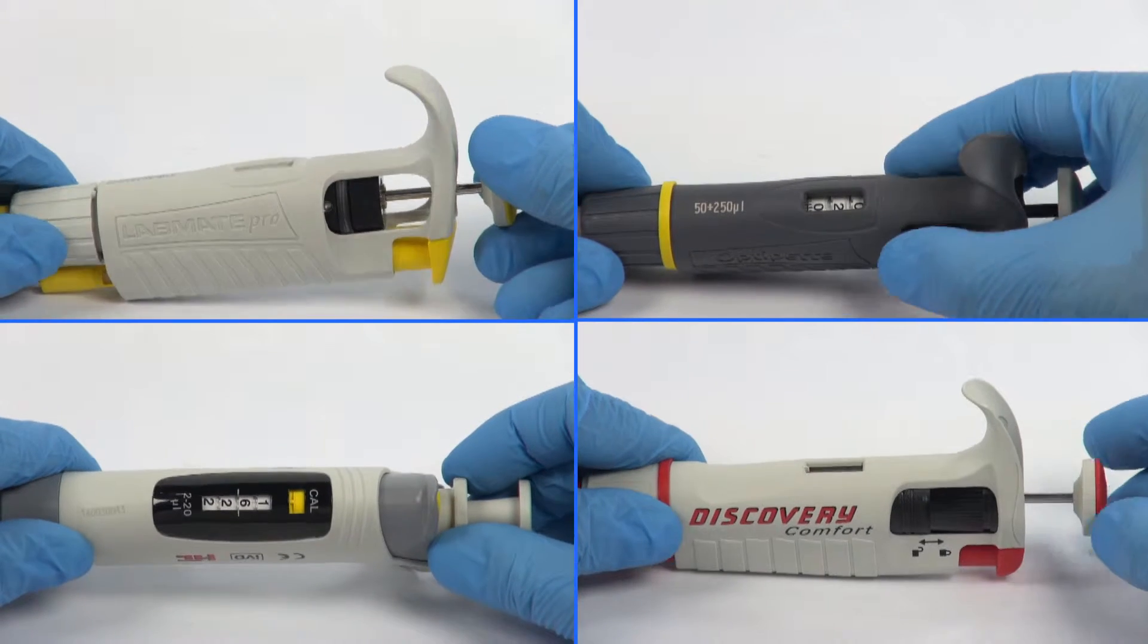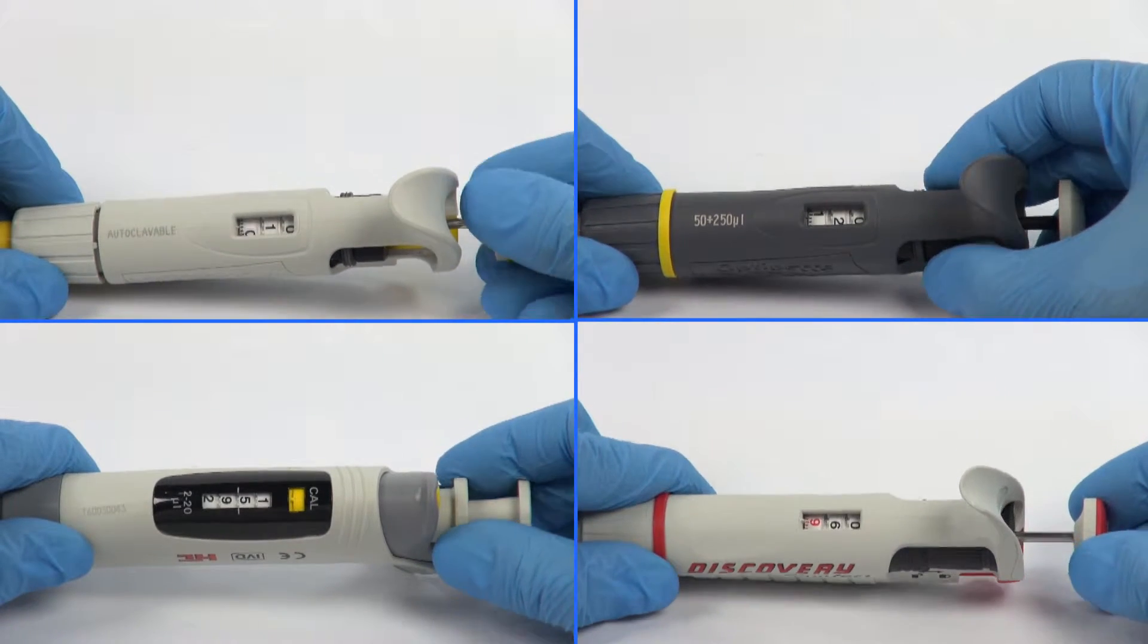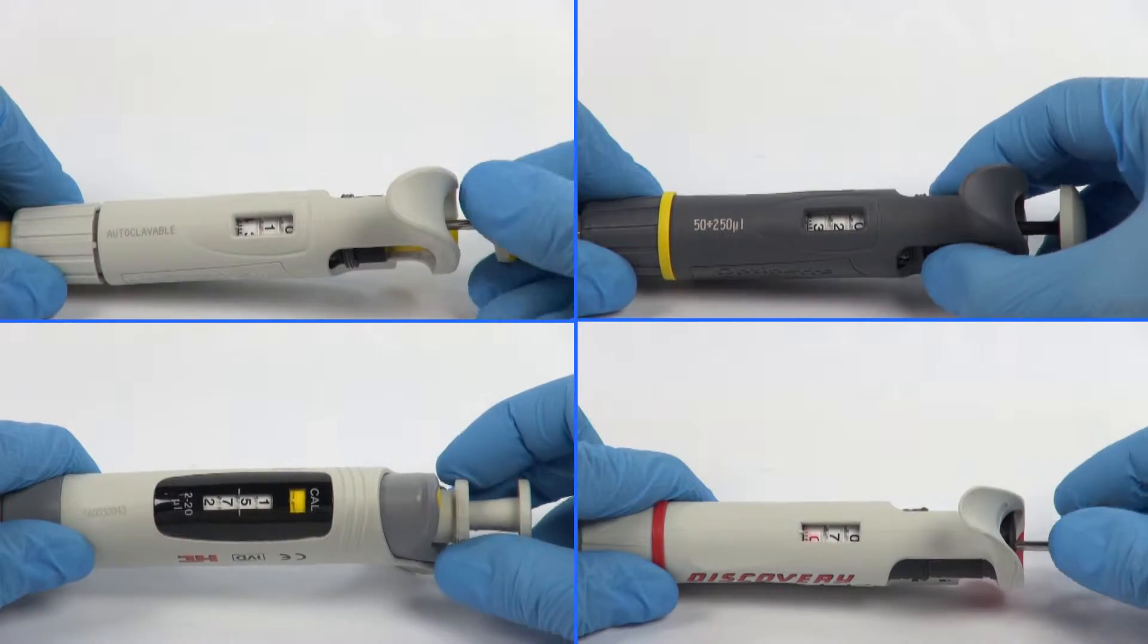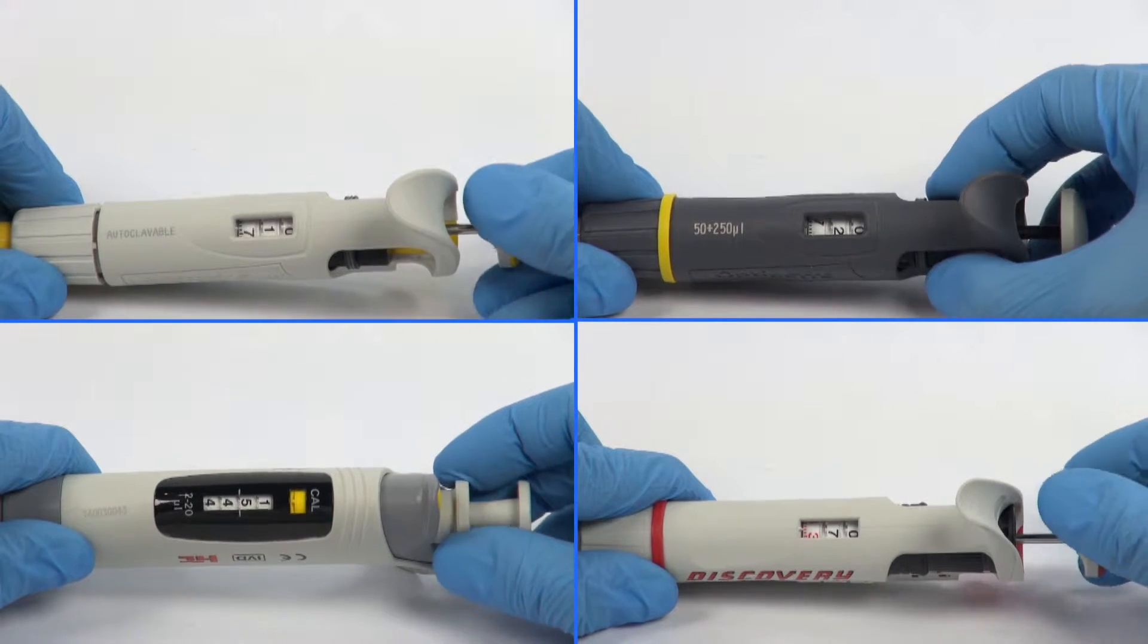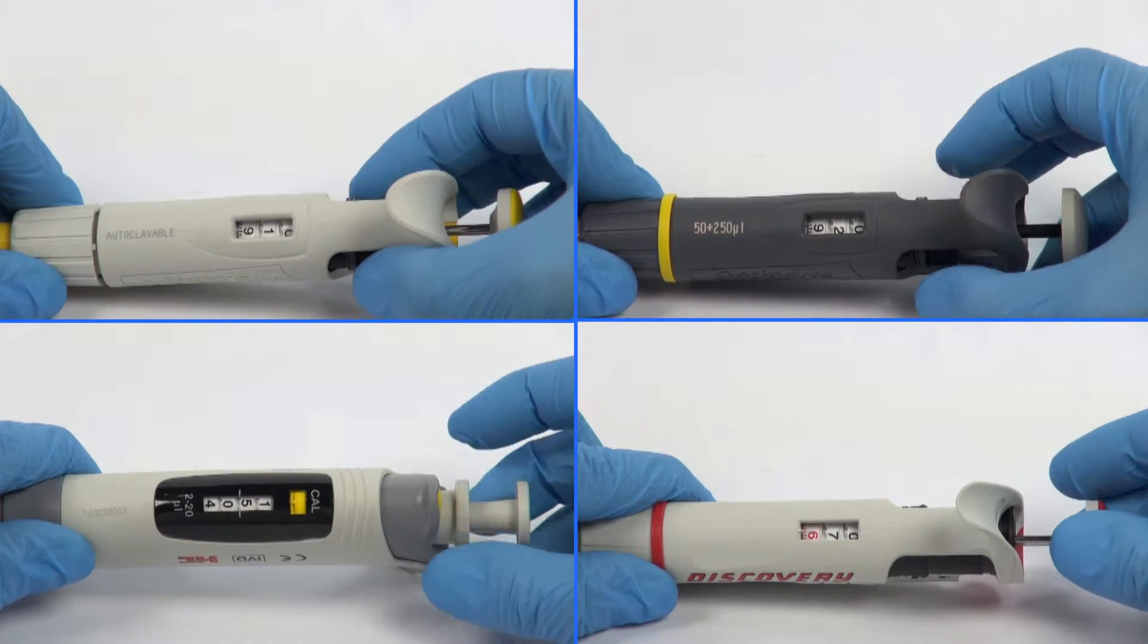Depending on the pipette model, the volume setting can be done either by the pipette push button or by the volume adjustment knob.